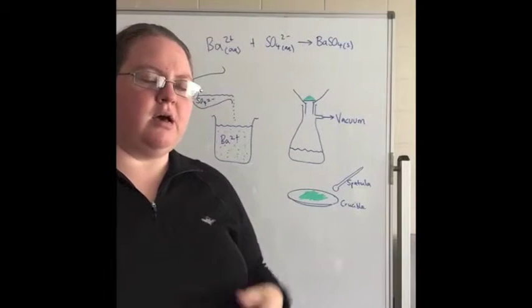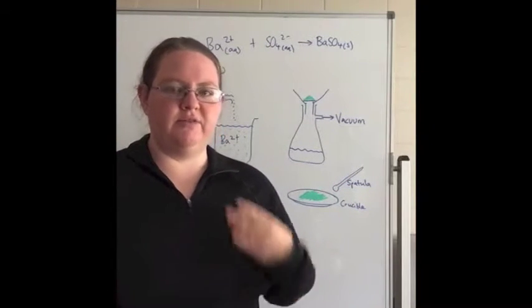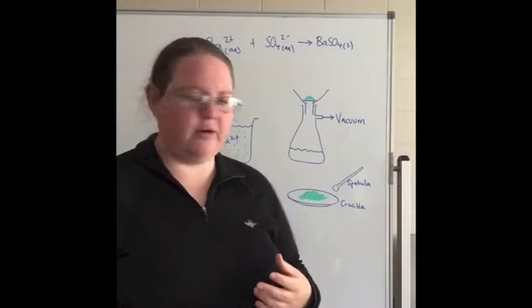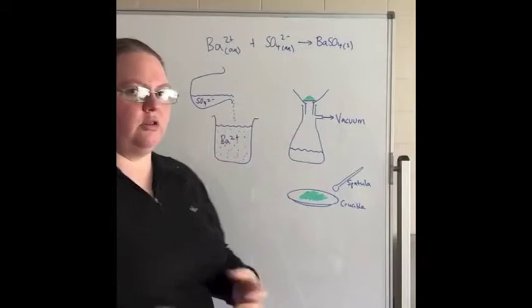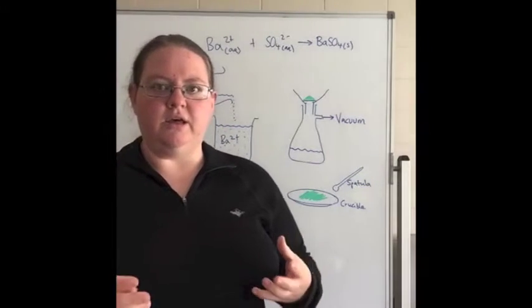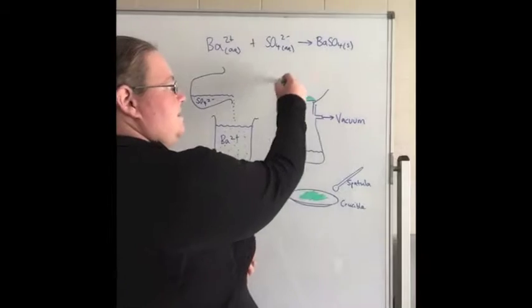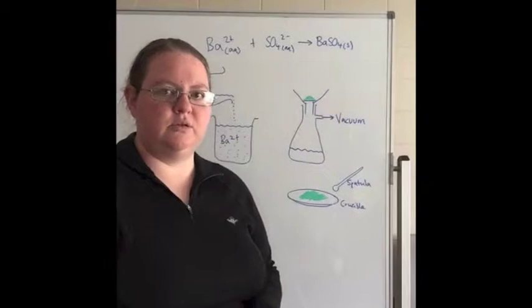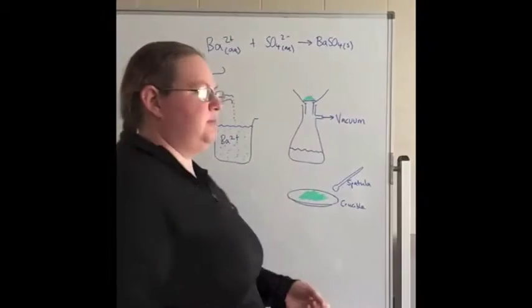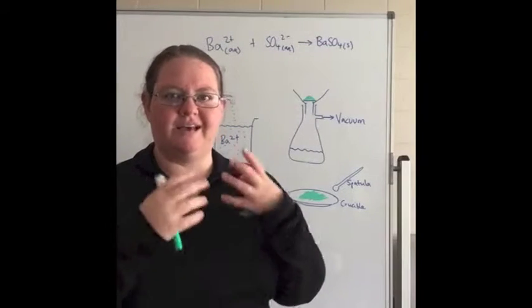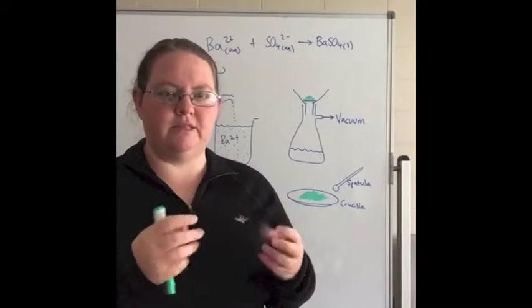But then what we do is we would go and wash that. One potential source of error is very minor, but obviously if this is a complex matrix you've got lots of different things in there, you need to rinse it out. If you don't rinse it, that is also a source of error. You need to very thoroughly rinse your precipitate so there's nothing on there except for your precipitate. If you don't rinse it, there's potential for contamination.